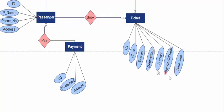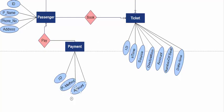The ticket has: number of seats booked, date, and time. The payment has the following attributes: ID, payment method, and amount.